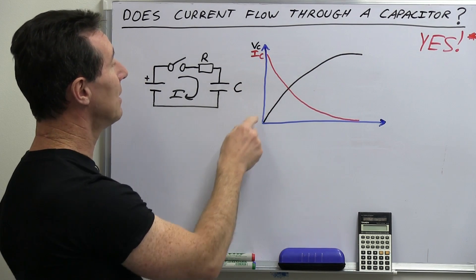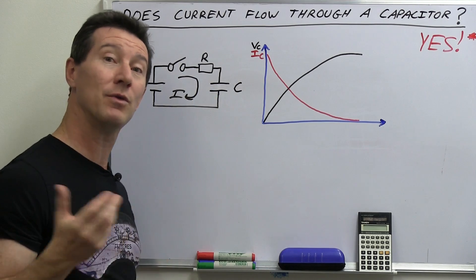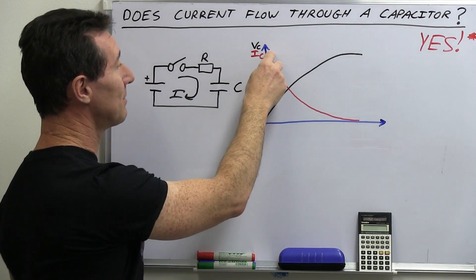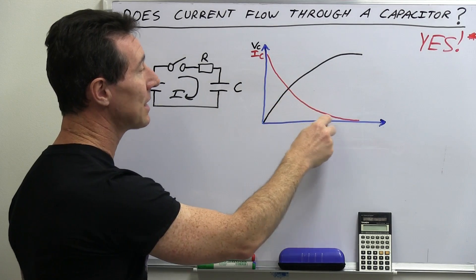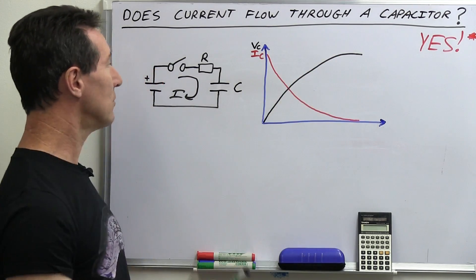And of course, the current starts off incredibly high because the capacitor is effectively a short circuit when you close that switch. So the current is at maximum, and then it slowly tapers off a direct mirror image of that until the current goes to zero.